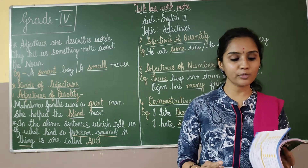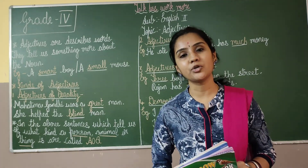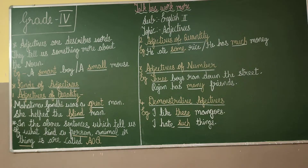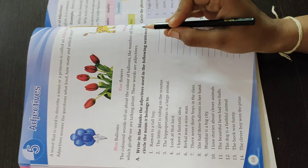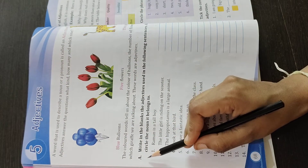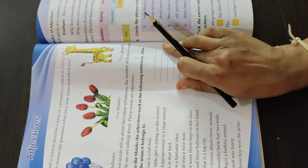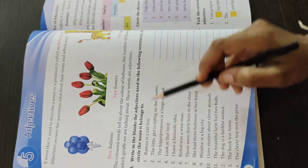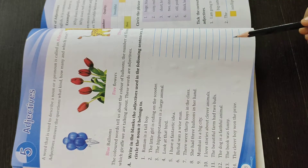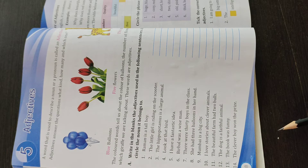Let us learn more about adjectives by doing the textbook exercise. I want you all to be ready with your pencil and start doing the textbook exercise. First: Exercise A — write in the blanks the adjectives used in the following sentences, and also circle the noun it belongs to.